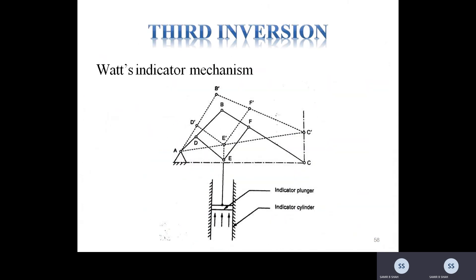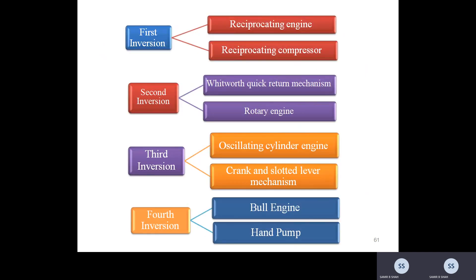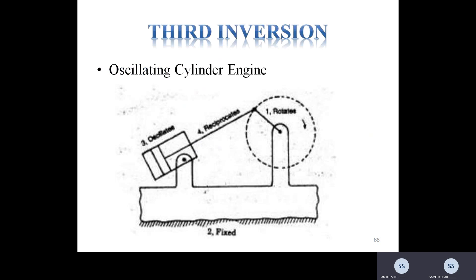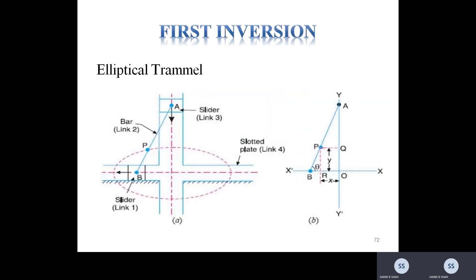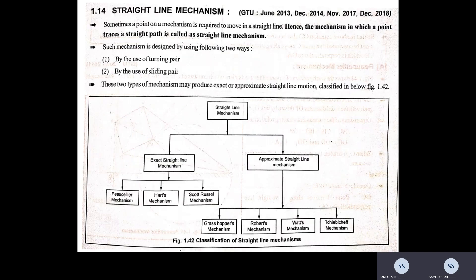Currently we talk about the exact straight line mechanism. As discussed earlier, if we talk about the exact straight line mechanism, it may be based on two types of pairs: turning pair and sliding pair. Straight line mechanisms divide into two parts: exact straight line mechanisms and approximate straight line mechanisms. The approximate straight line mechanisms are of four types: Grasshopper's mechanism, Robert's mechanism, Watt's mechanism, and Tchebicheff's mechanism.